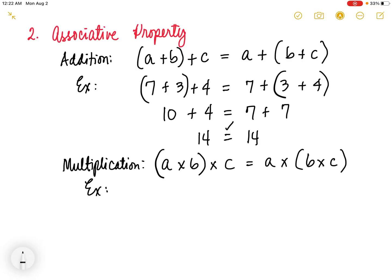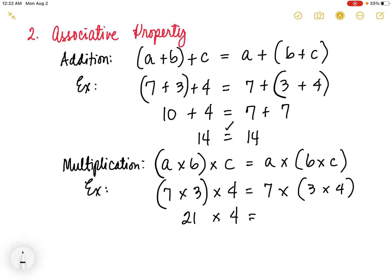For example, we have 7 times 3 times 4, grouping 7 and 3 on the left side, and 7 times 3 times 4 with different groupings on the right side. 7 times 3 is 21, multiplied by 4 gives 84. On the right side, 3 times 4 is 12, then 7 times 12 is also 84. So they are really equal. That is the associative property of multiplication.